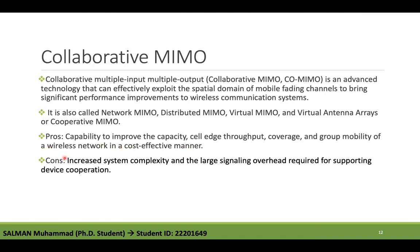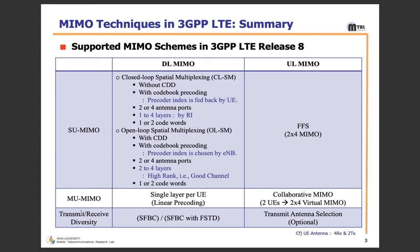Drawbacks of Collaborative MIMO include increased system complexity and large signaling overhead required for device cooperation. For transmit and receiver diversity in DL MIMO, it uses SFBC and SFBC with FSTD. For transmit antenna selection, when closed-loop antenna selection is enabled, the base station indicates which antenna to use for transmission by implicitly coding the information in the uplink scheduling grant using a 16-bit CRC scrambled by one of two antenna selection masks.